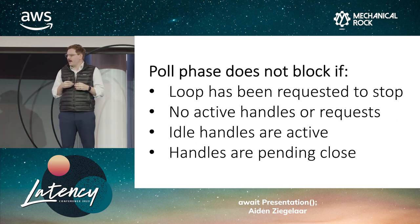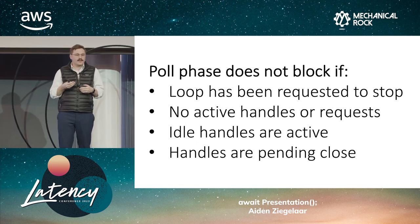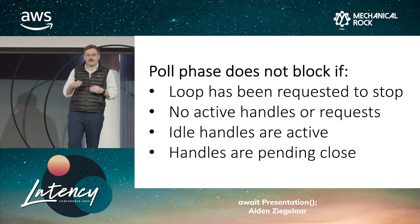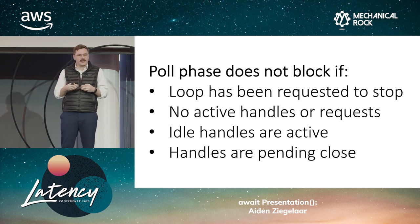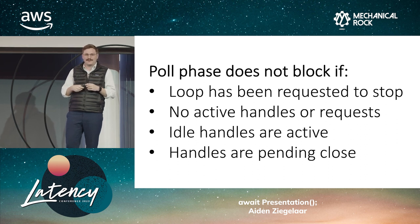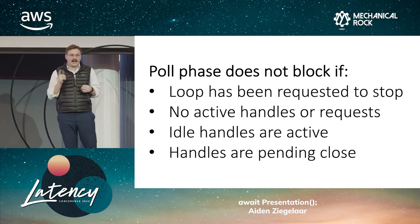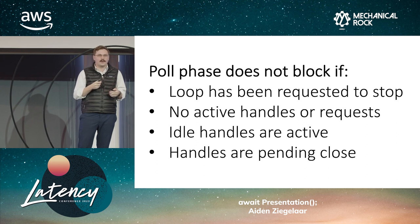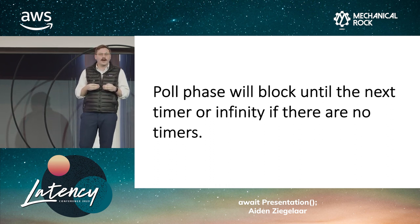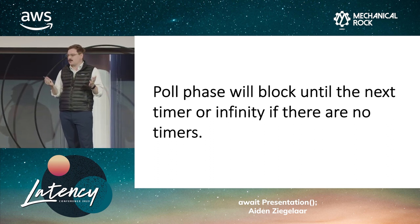In order to decide how long we actually need to block for, there are a couple of conditions that result in a zero timeout poll. Firstly, if the loop has been requested to stop, we won't block because the loop is going to exit anyway — we just continue so the loop can exit gracefully. Likewise, if our continue condition — not having any active handles or requests — is false, then we won't block because the event loop is going to be exiting. If we register any idle handles that run the loop flat out, then the poll phase won't block. And if any of our handles are pending close, we will not block to allow the close callback to be called. If none of these conditions are met, the poll phase will block until the next timer is due to be run, or if there's no timers, we'll poll indefinitely waiting for a purely external event to wake us up.